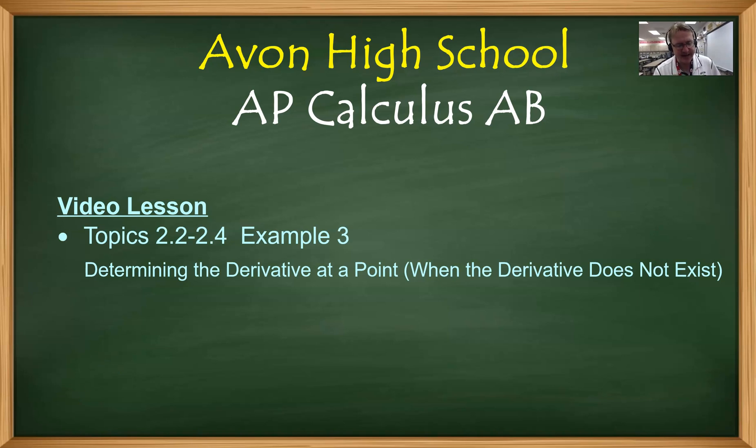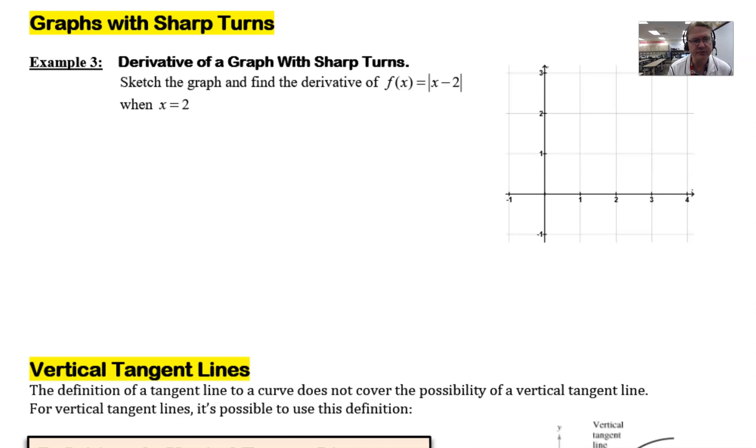So that example that I talked about looks like this in your notes. It's entitled graphs with a sharp turn and it begins with asking you to sketch the graph and to find the derivative of f(x) equal to |x - 2| when x = 2.